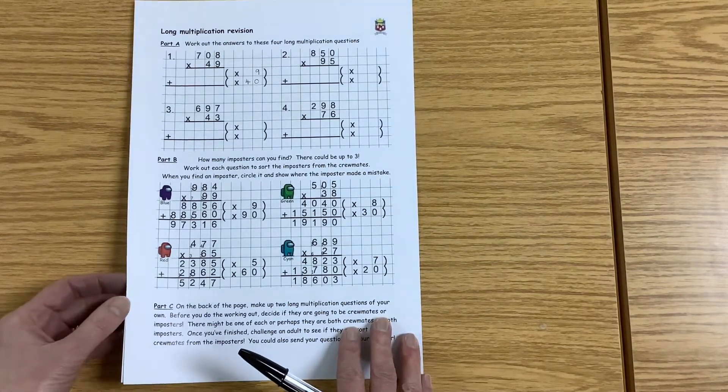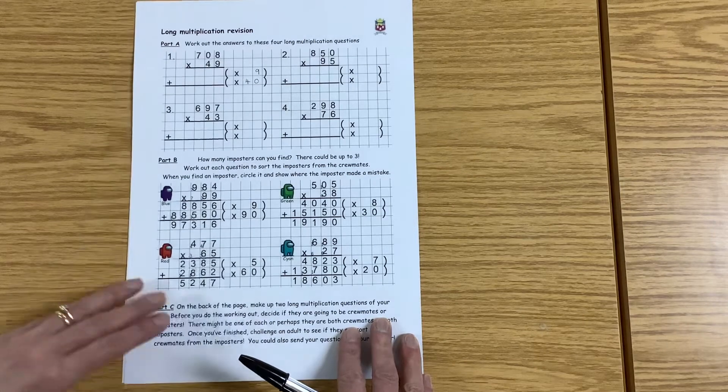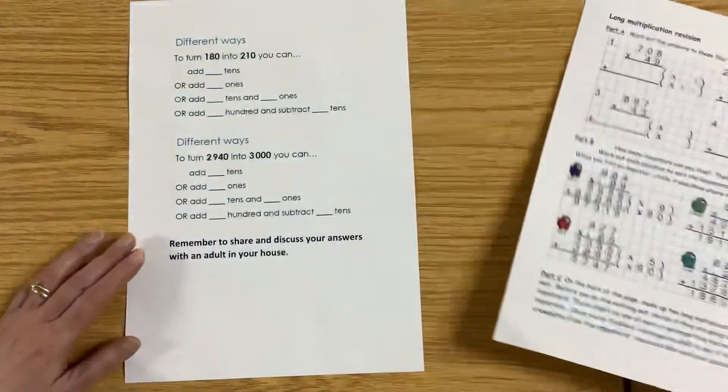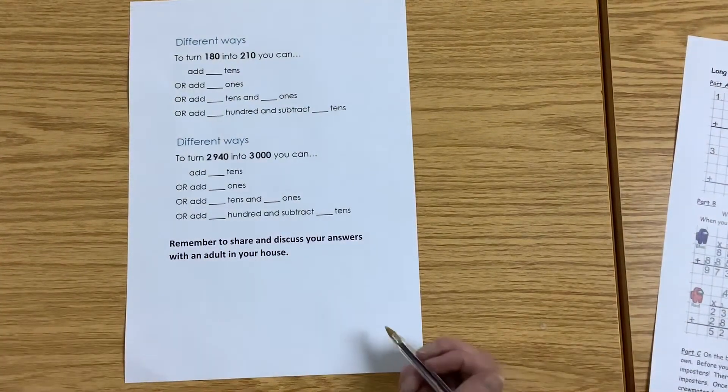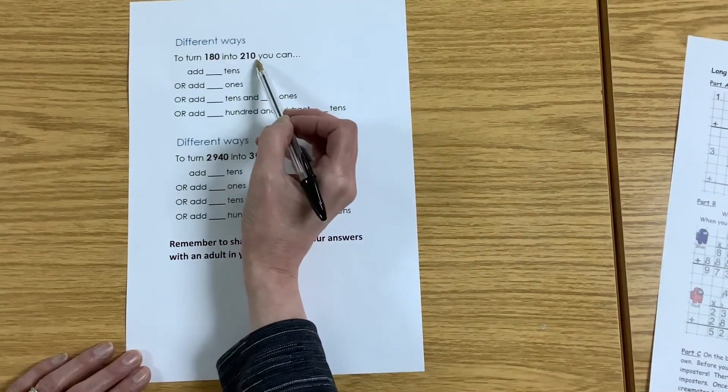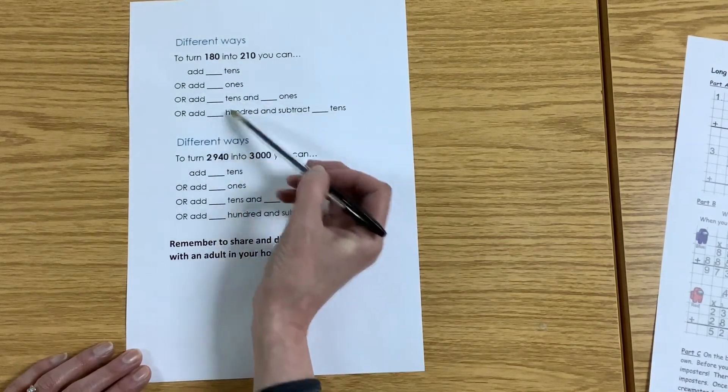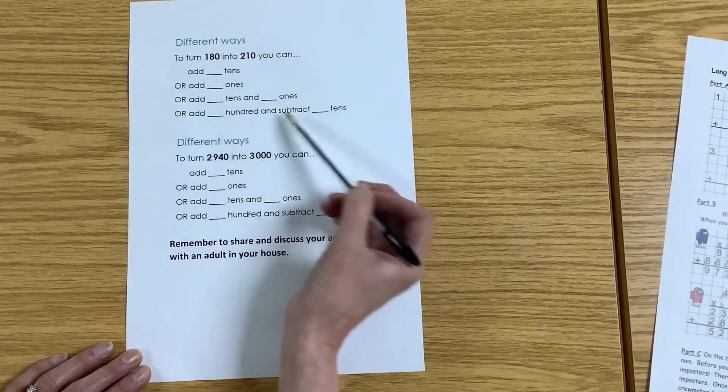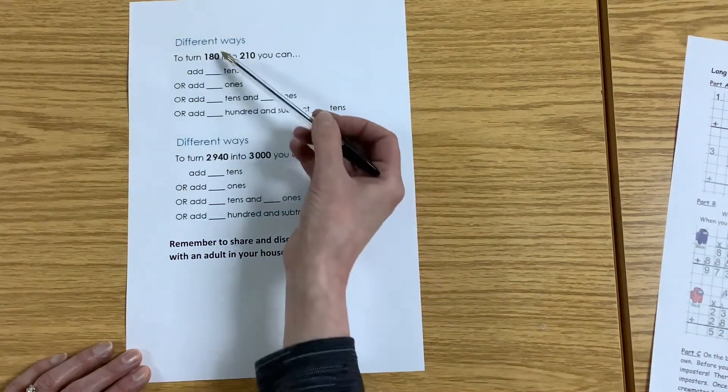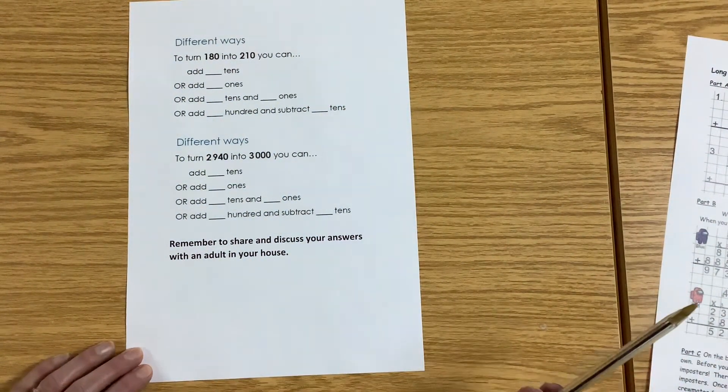Your final maths challenge for today is our reasoning challenge, our daily reasoning challenge. For today's daily reasoning challenge, I want you to see if you can come up with different ways to turn one number into another number. It might be by adding, it might be with adding and some subtracting. How many ways or which different ways can you work out to change one number into the other number?